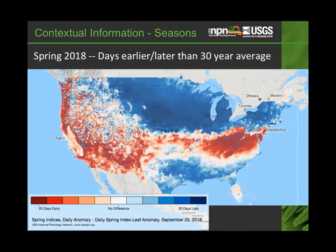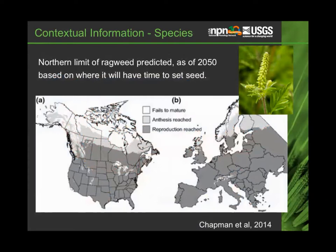We also have the potential to support more contextual information about species. Data collected with Nature's Notebook helped inform the predicted northern limit of ragweed as of 2050, based on where it will have enough warmth to go through its fall cycle and set seed. There's an opportunity to provide broader contextual information both about seasons and about species.